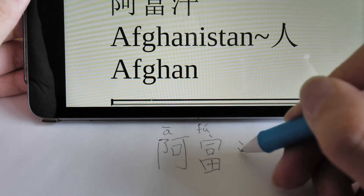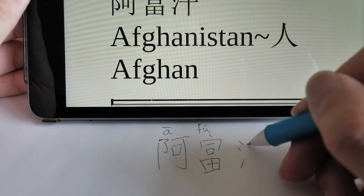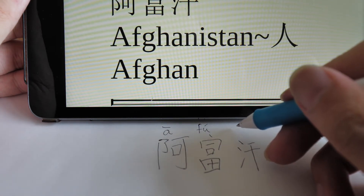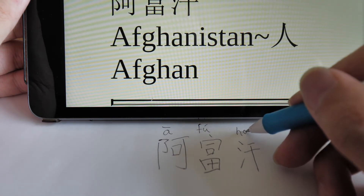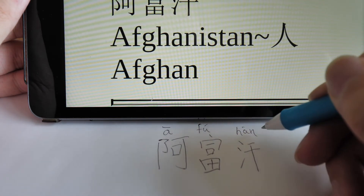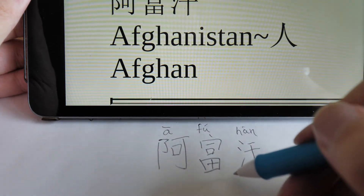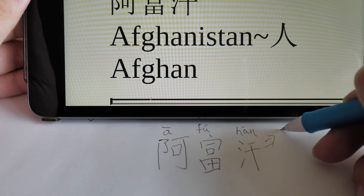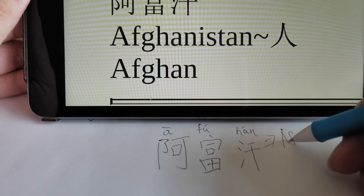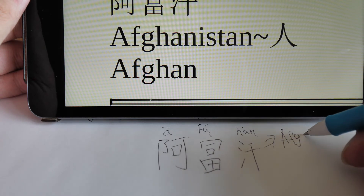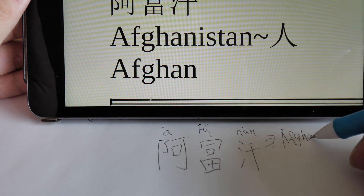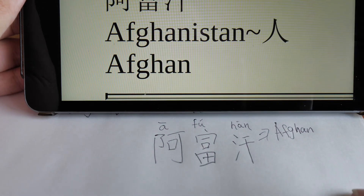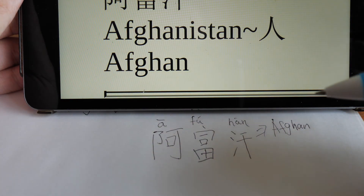One, two, three, four, five, six. Han. Afuhan is Afghan in Chinese. Peace.